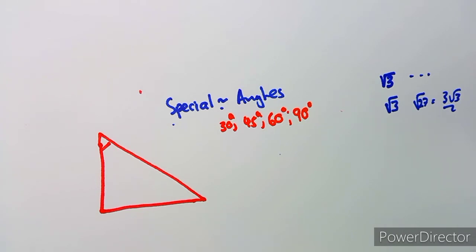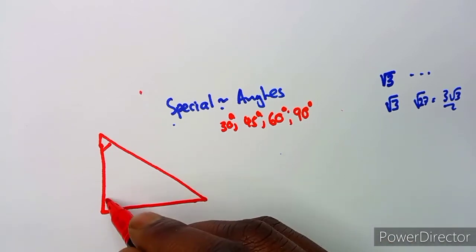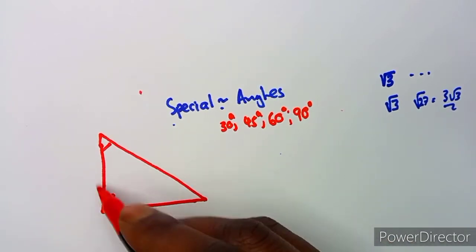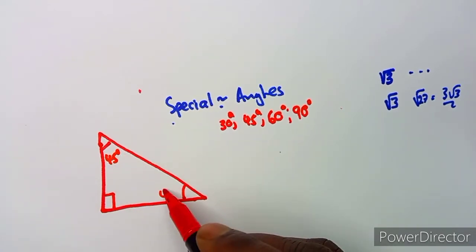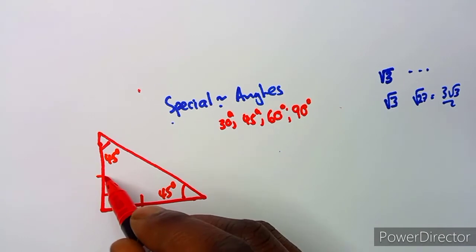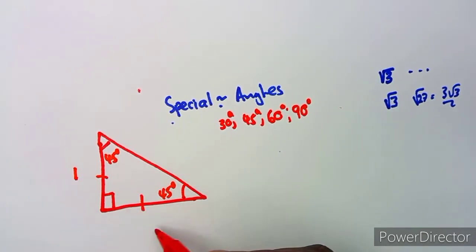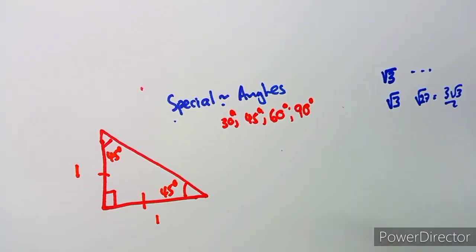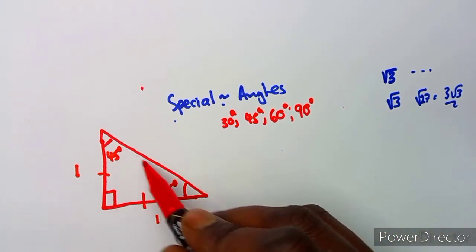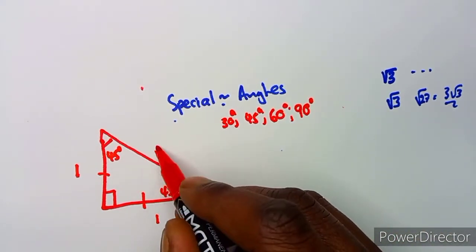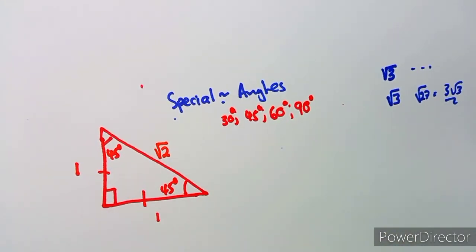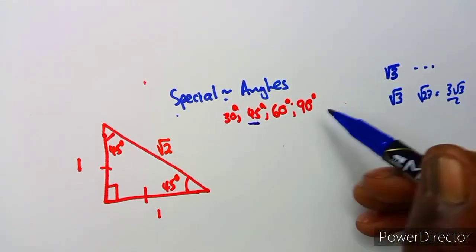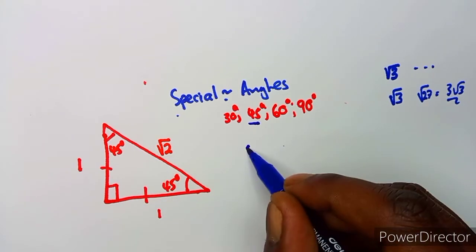For the isosceles triangle, this is going to be 45 degrees and 45 degrees. Both sides are equal so we put one and one. From Pythagoras' theorem you can calculate the third side and obtain square root of two. So we can obtain the ratios of 45 degrees from this triangle alone.